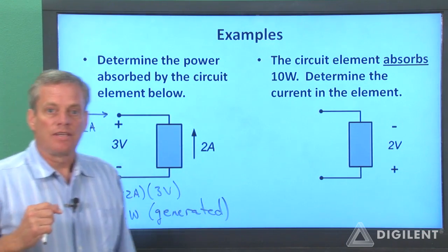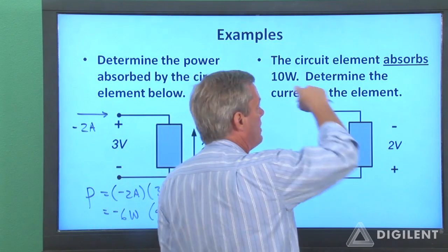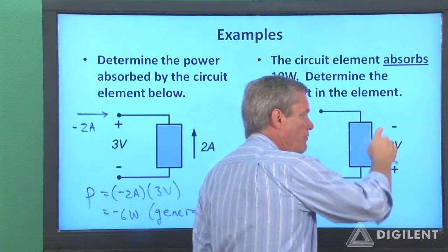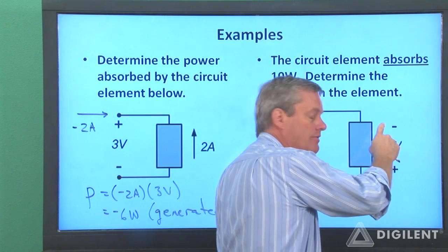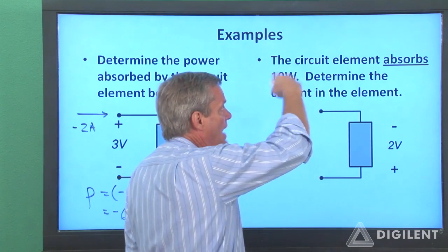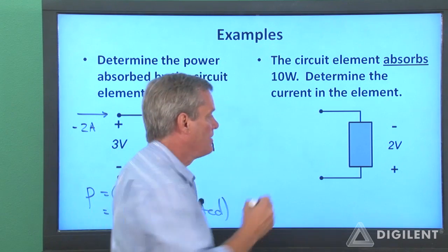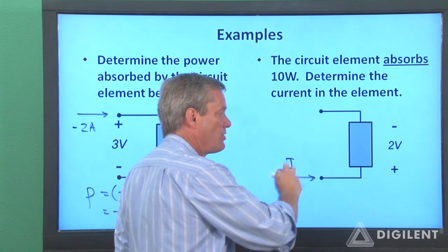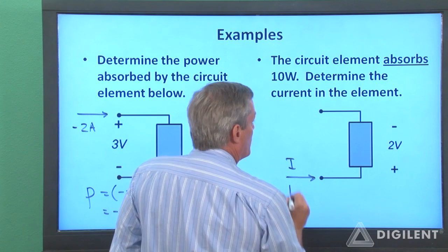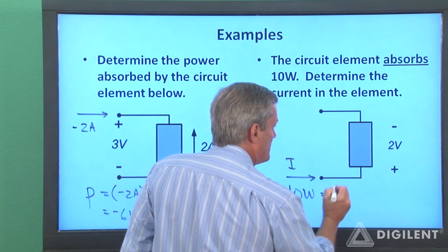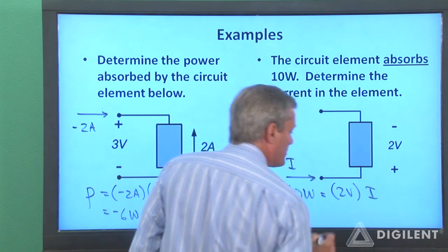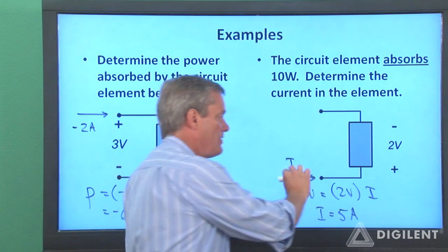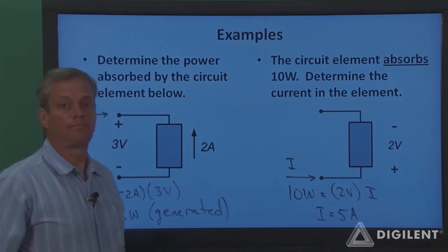In this problem, a circuit element absorbs 10 watts of power. We know the voltage difference across the element is 2 volts with this voltage higher than this voltage. Since the power is positive, current must be entering the positive voltage terminal. So I have some unknown current I entering there. 10 watts equals 2 volts times I, so I equals 5 amps. It's a positive number, meaning that is actually the direction the current is going in.